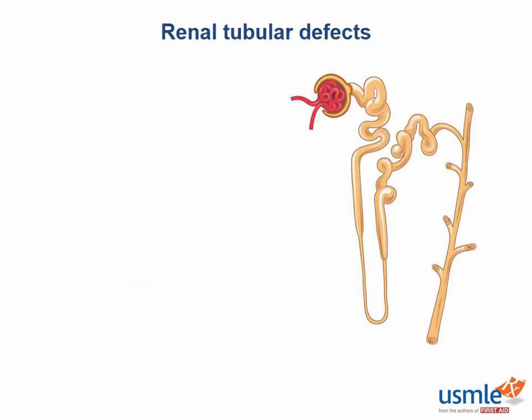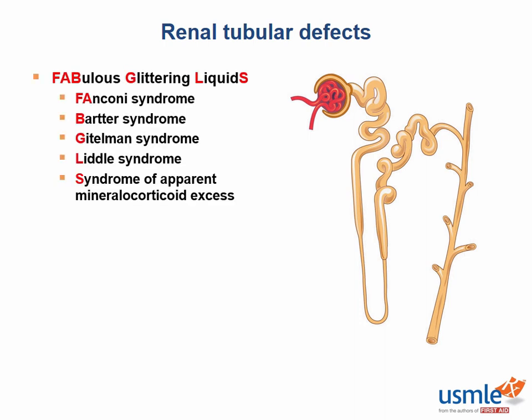The eponyms for Renal Tubular Defects can be hard to remember, but some people like the following mnemonic because it helps you remember the order of these syndromes along the nephron: 'kidneys put out fabulous glittering liquids.' I personally don't like mnemonics, so I just remember the alphabetical order. Fanconi is first, starts with F, so it occurs first in the kidney at the proximal convoluted tubule, and the rest are in alphabetical order descending down the nephron.